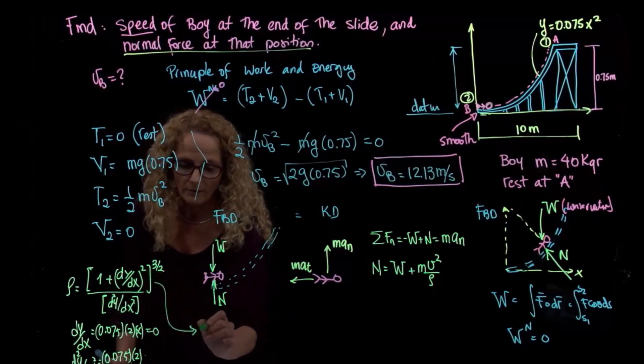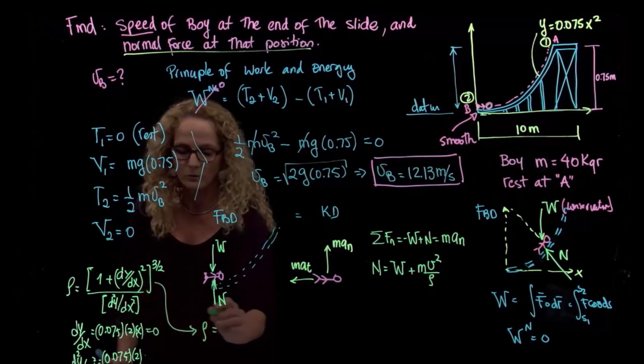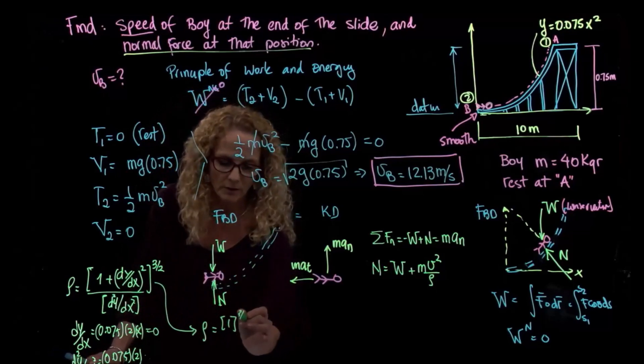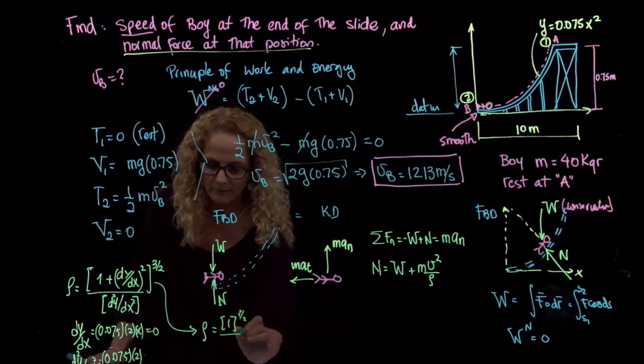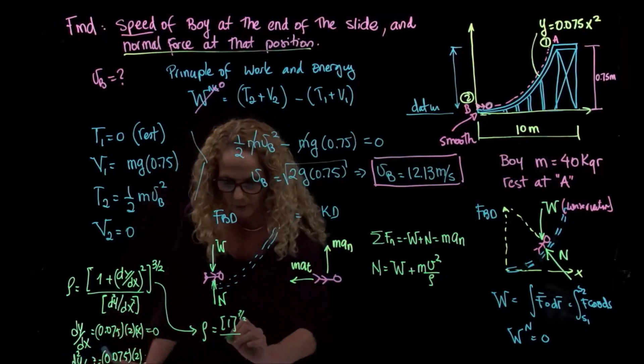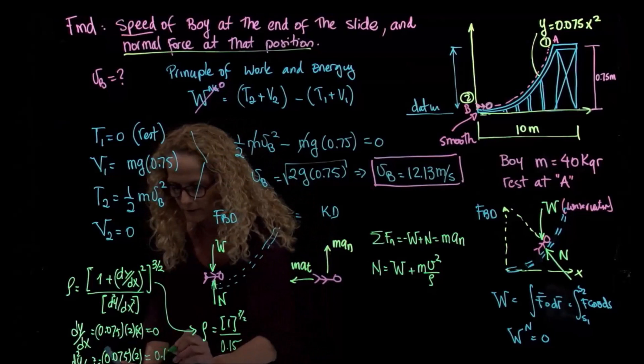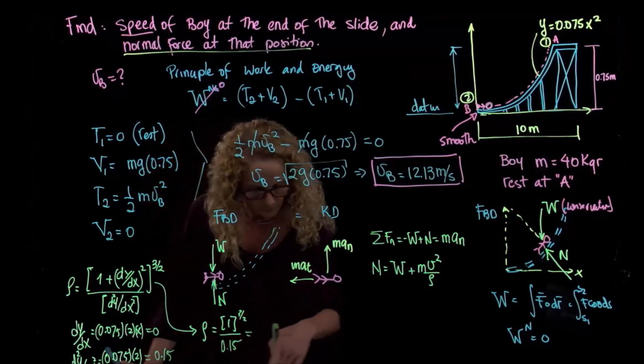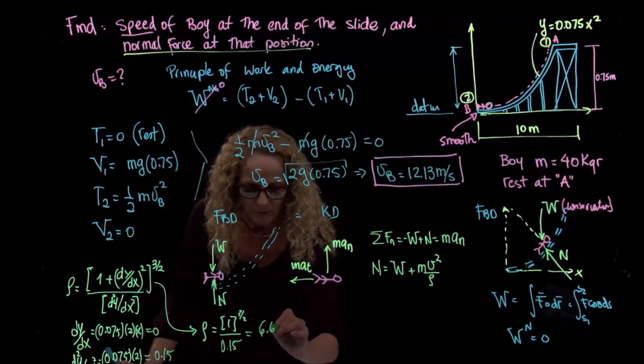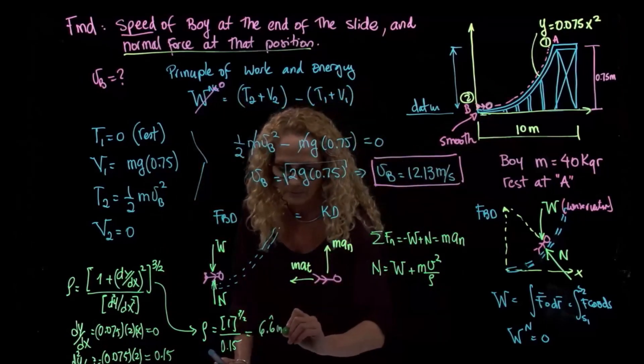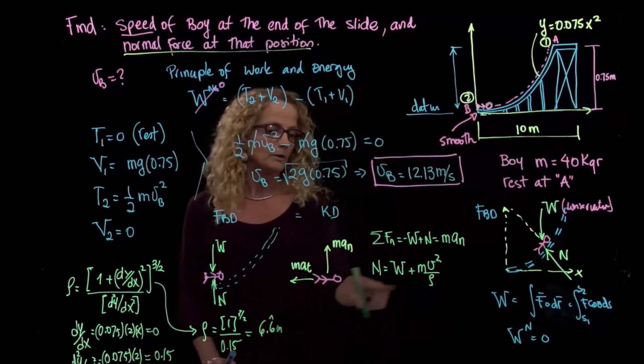Therefore, my radius of curvature will be equal to 1 to the 3-halves, which is just 1, right, divided by this 2, and this is 0.15. That's it. This is 0.15. So my radius of curvature gives me a value of 6.6 periodic, and this is given in meters. And I substitute this number over here, and the weight is also given because it's mass times gravity.